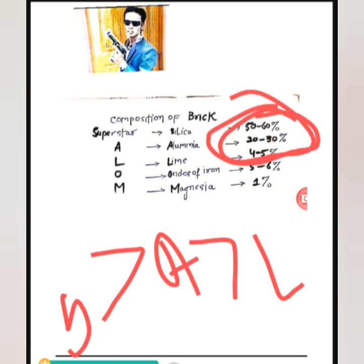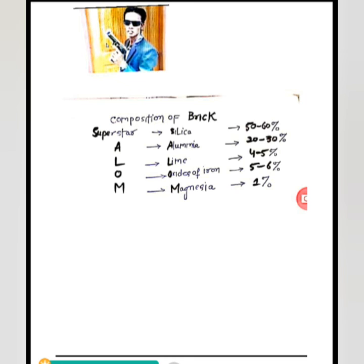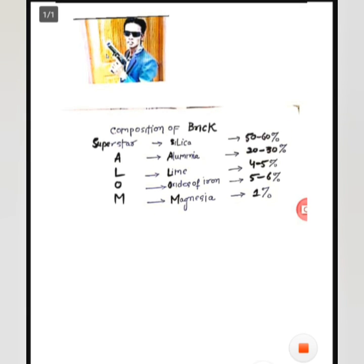So by this trick, we can remember the percentages in decreasing order of composition. Basically, we just have to remember 'Super Star Alom.' I hope you've got it. In this video, you are requested to subscribe to the channel. Thanks.